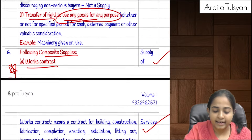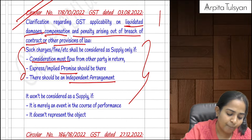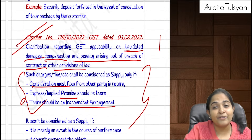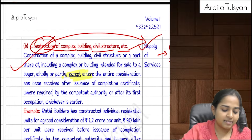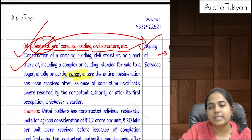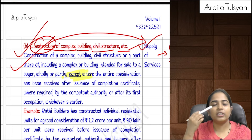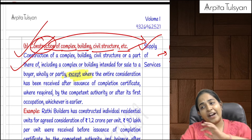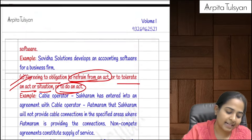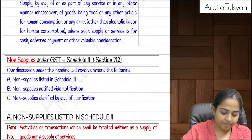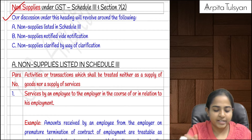Also remember: normal construction service where entire consideration is received after completion certificate or first occupation — totally outside the purview of GST. If entire consideration is received before, or some before and some after, then GST is applicable and it is supply of services.